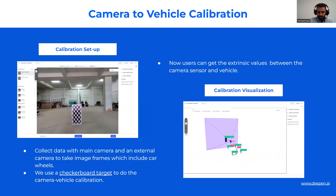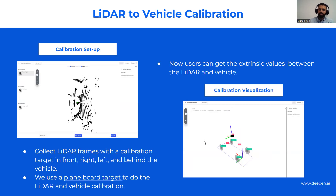Camera-to-vehicle calibration is done with a checkerboard at a known distance, and we provide easy-to-use visualization showing the relationship between camera and vehicle in all six degrees of freedom: XYZ and pitch, yaw, and roll angles — with both translation and angular resolution provided. Similarly, for LiDAR-to-vehicle, we support targetless calibration, but for best accuracy we advise using targets. A simple plane board target can be used for a fully automated workflow to get the extrinsic calibration between LiDAR and vehicle.